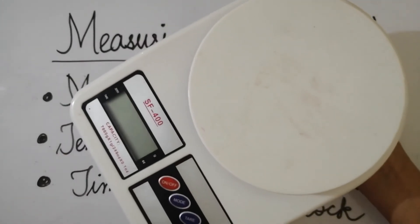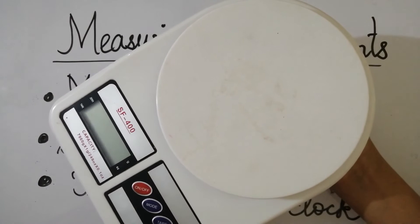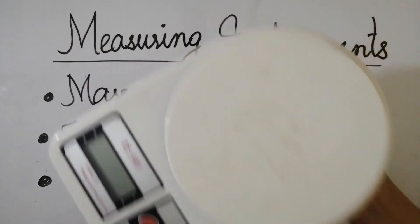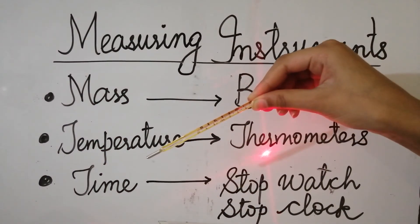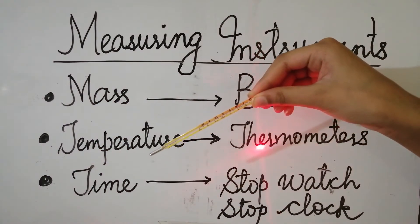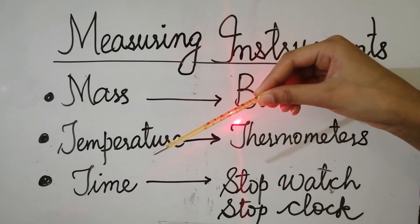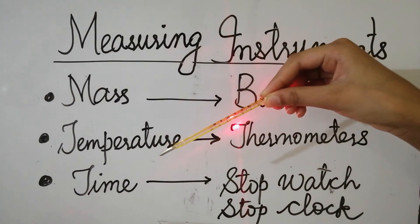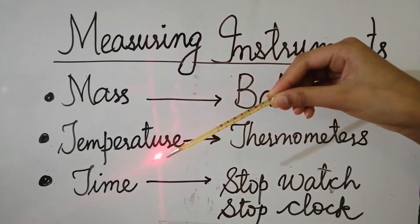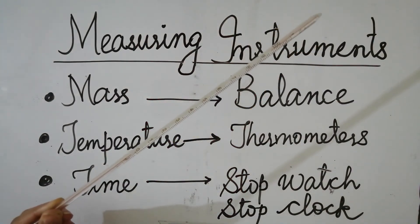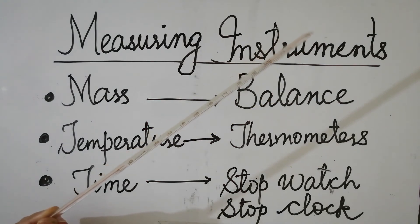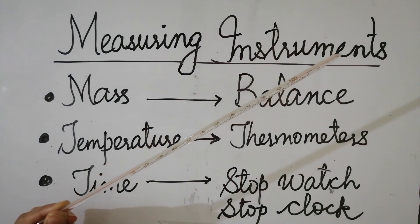This is the balance, which is used to measure mass. Temperature can be measured by an instrument called a thermometer. This is a clinical thermometer used to check the fever of a person.